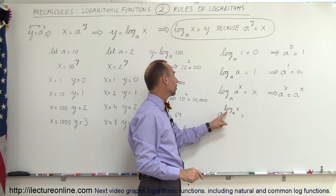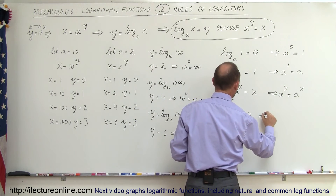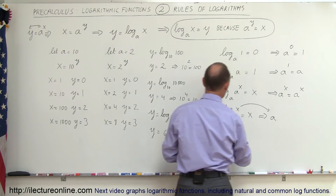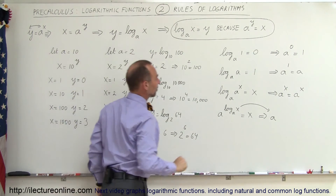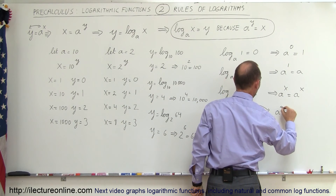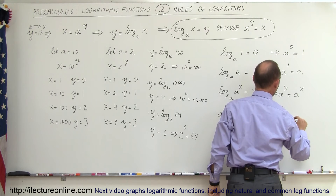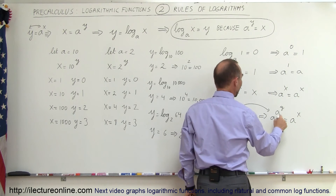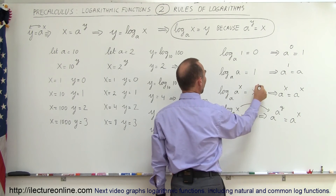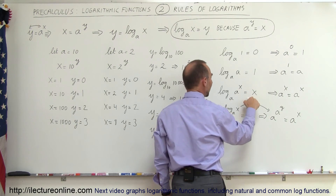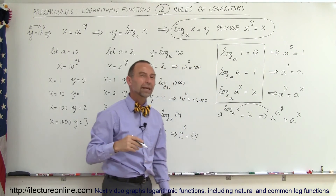Finally, a to the log base a of x — what does that equal? It equals x. We can see this by substituting log base a of x with y, so we have a to the y. And since a to the y equals x, we get x. Therefore, log base a of a to the x equals x, and a to the log base a of x also equals x. These are the four main rules of logarithms.